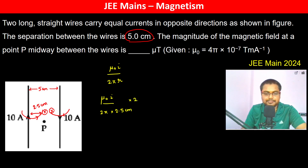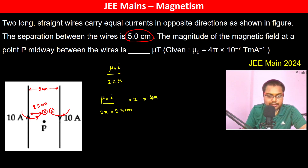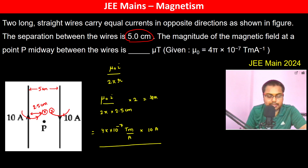So we have 4π × 10⁻⁷ Tesla·meter/ampere, multiplied by I which is 10 amperes, divided by 2π × 2.5 centimeters, that is 2.5 × 10⁻² meters.